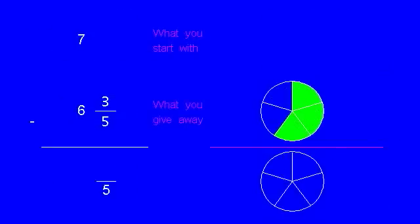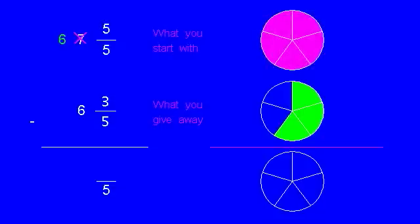What do you do if you don't have enough pieces to give away? Will you still borrow? So here, we could take one of those wholes, leaving six, and since we need fifths, we'll break it into five fifths.